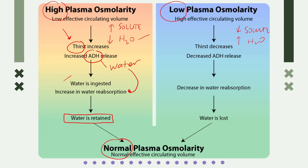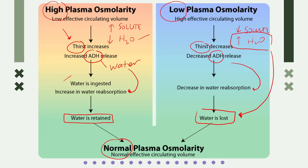On the other hand, when there is low plasma osmolarity — too much water — thirst decreases and ADH decreases, meaning no water reabsorption and no water ingestion, so water is lost through the kidneys in the form of urine, and plasma osmolarity normalizes. Note that ADH is also known as AVP — arginine vasopressin — which is its former name.